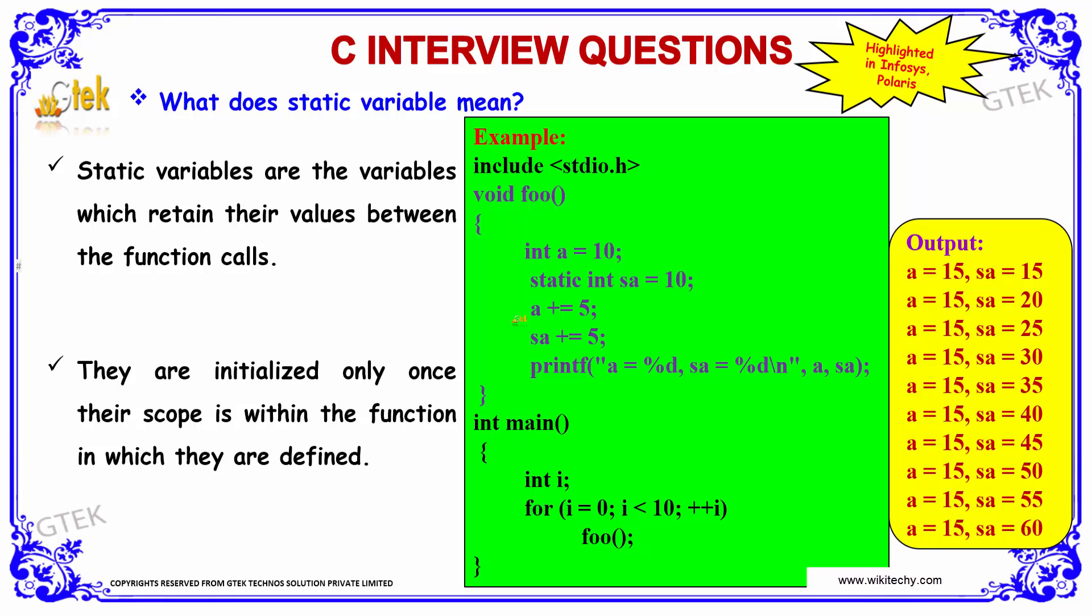We have a plus equal to 5, sa plus equal to 5. This is the integer variable and this is the static variable. We have the print statement here and the main function.